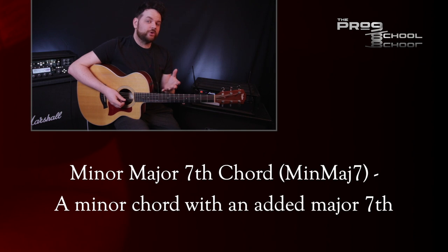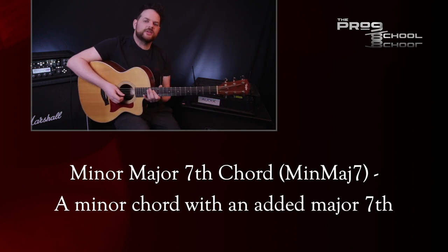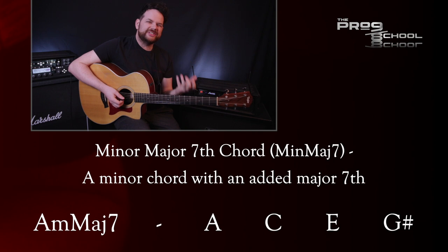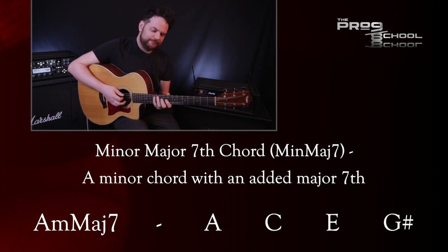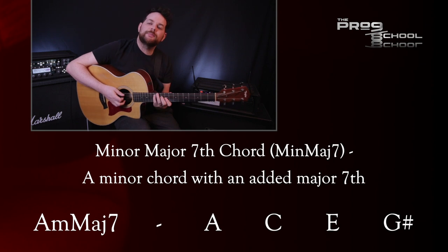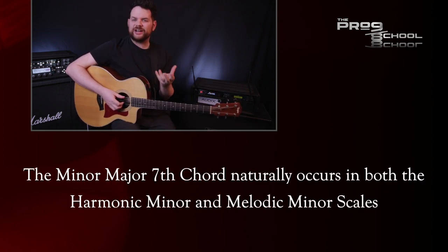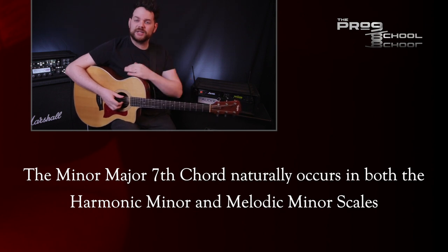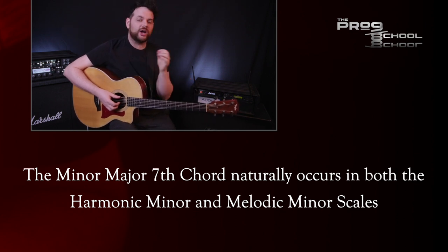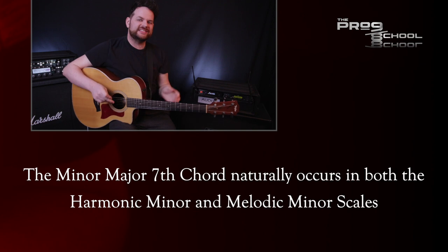The minor major seventh chord is what it sounds like: a minor chord with a major seventh. For example, an A minor chord has the notes A, C, E. Add the major seventh interval — G sharp — and you get an A minor major seven chord. This chord naturally occurs in both the harmonic and melodic minor scales on the root chord, because both of those scales contain a raised seventh degree.